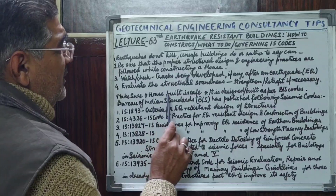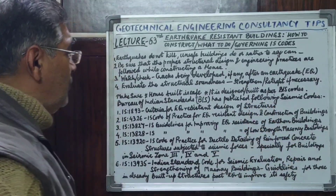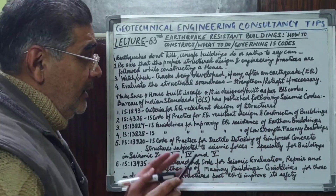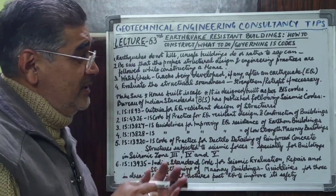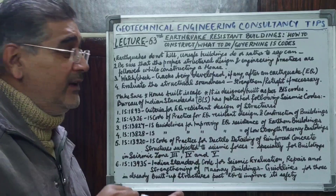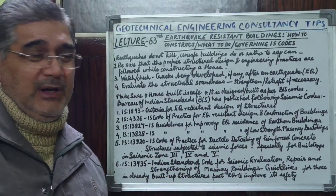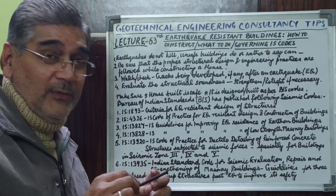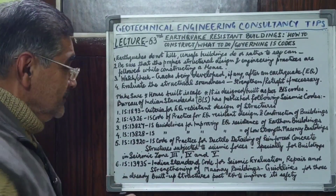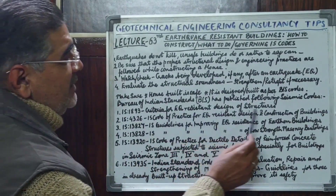We have to make sure that our houses are built safely and are designed and built as per the Bureau of Indian Standards codes. The Bureau of Indian Standards has published the following seismic codes. IS 1893 is the criteria for earthquake-resistant design of structures.